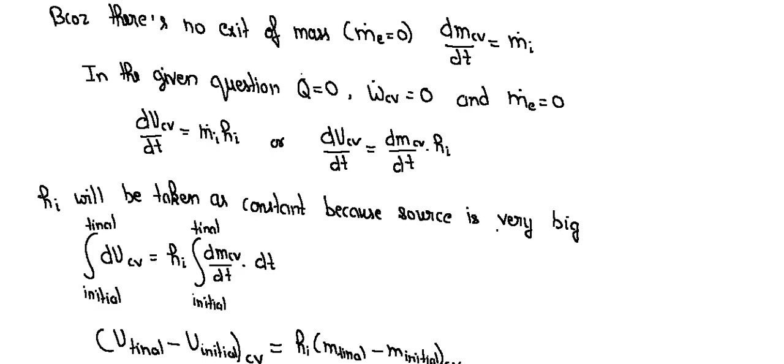We will assume that hi will be taken as constant because our source is very big. We will integrate this equation from initial value to final value. dUcv initial to final, hi is constant, we take outside from the integration, initial to final dmcv/dt into dt.